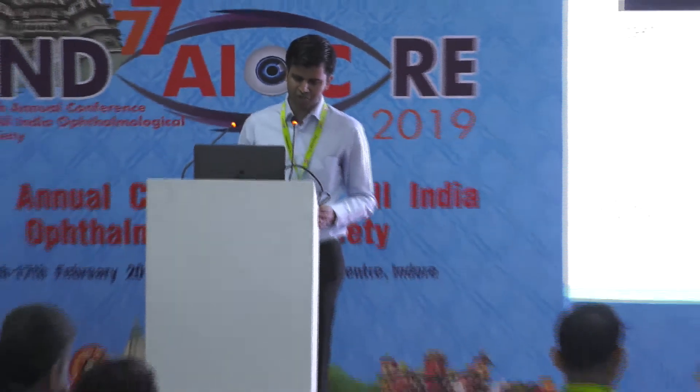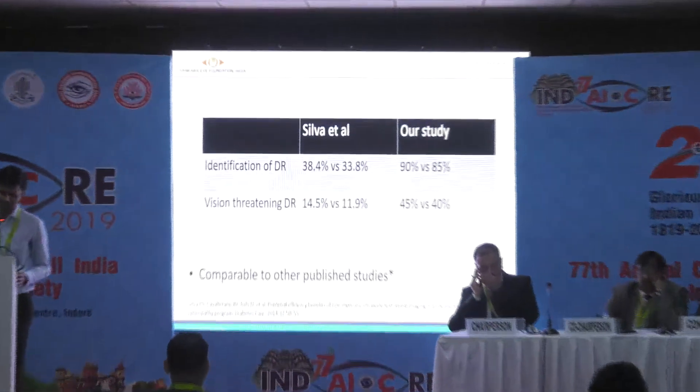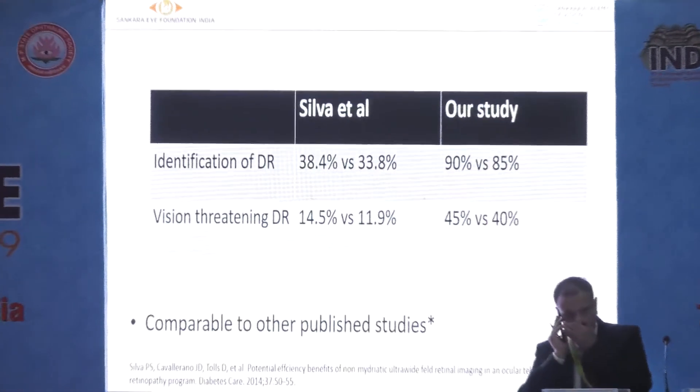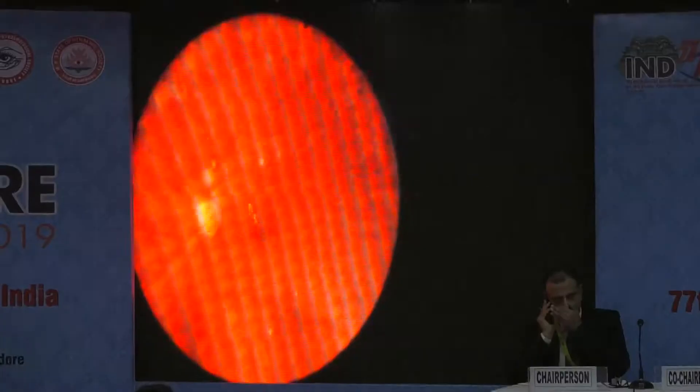In the discussion, other published studies have compared fundus imaging with Optos versus non-mydriatic devices, and our results are almost comparable with them. In the identification of DR, there is about 5% more DR detection rate, and for vision-threatening DR also about 3 to 4% more detection rate.